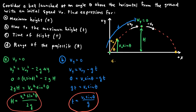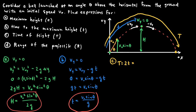Part (c) is the total time of flight, capital T. One quick method: since the path is symmetric (launched from and landing on the ground), the total flight time is simply T equals 2 times the time to reach maximum height, giving T equals 2·v-naught sine theta divided by g.